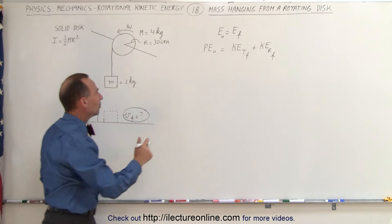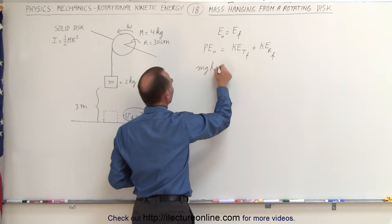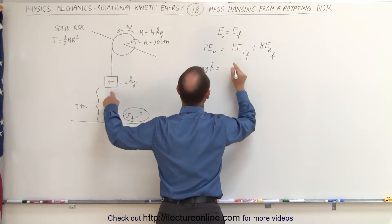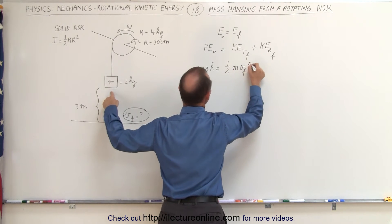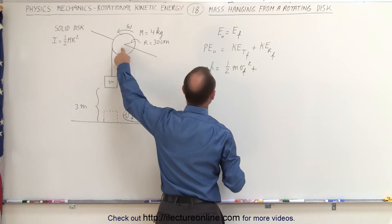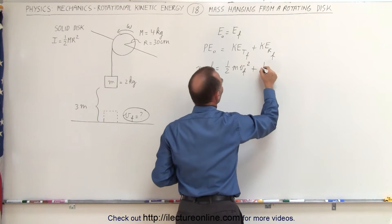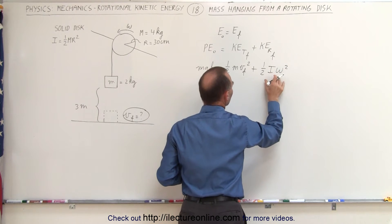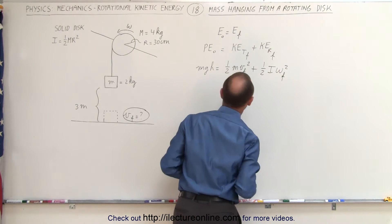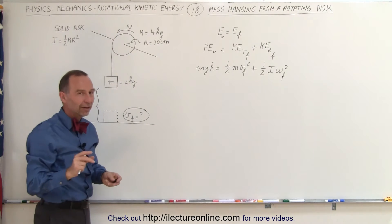The potential energy would be mgh, and that will equal the translational kinetic energy, which is one-half mv final squared, plus the kinetic energy rotational, that would be one-half I omega squared. And of course, that's the omega final squared, and that is the rotational kinetic energy of the disk itself.